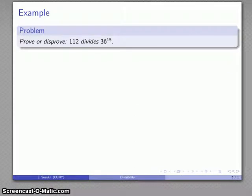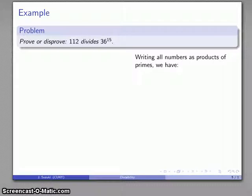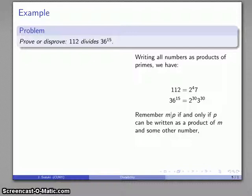How about a different problem, 112 divides 36 to the 15th, yes or no? And again, I want to write all of my numbers as products of primes, 112 is 2 to the 4th, times 7, 36 to the 15th, works out to be 2 to the 30th, times 3 to the 30th. And remember that one number divides another only when I can write the second number as a product of the potential divisor and something else.